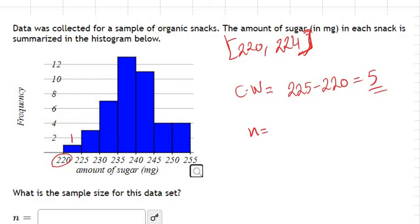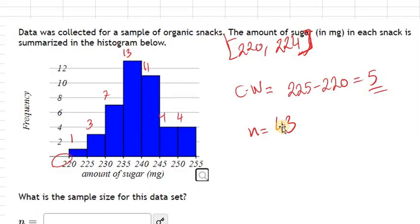So the frequency is 1, the frequency here is 3, the frequency here is 7, the frequency here is 13, this is 11, and this one is 4, and this one is 4. So if you add all of these numbers up, the answer is 43. So the sample size here is 43.